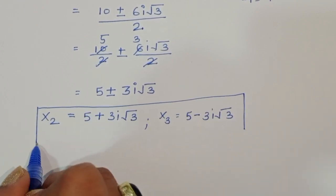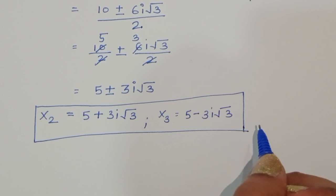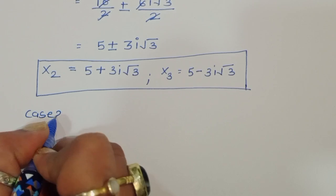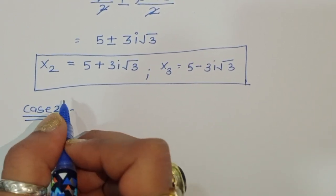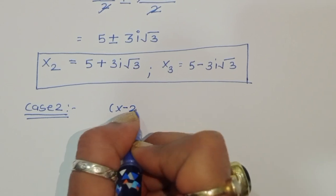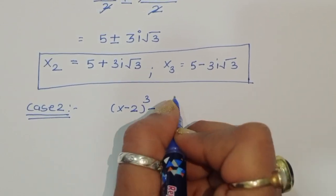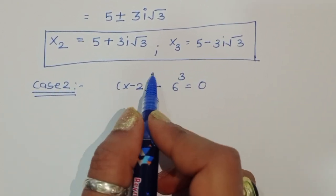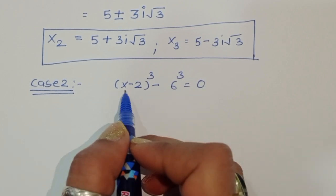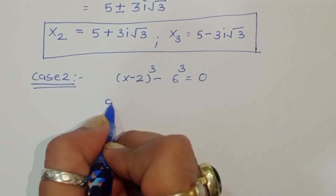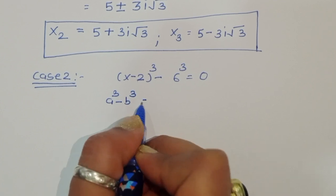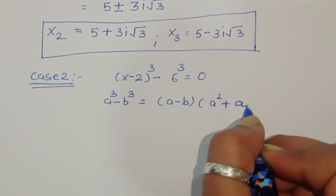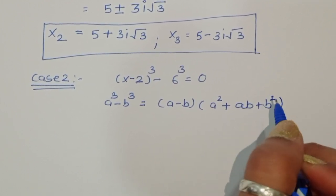Now we take Case 2, which is equation number 2: (x minus 2)^3 minus 6^3 equals 0. This is the form of a³ minus b³. The formula is a³ minus b³ equals (a minus b)(a² plus ab plus b²).